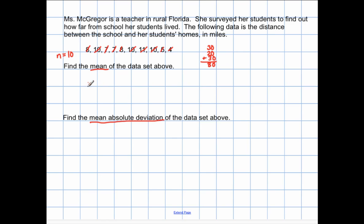So again, to find the mean, we take the sum of all of the data, and then we divide it by how many data points we have. So the sum of the data is eighty, and we divide it by the number of data points we added up, which is ten, and then eighty divided by ten is eight. So our mean of the data set is eight.